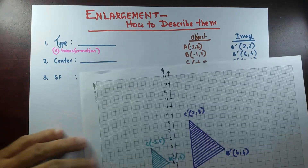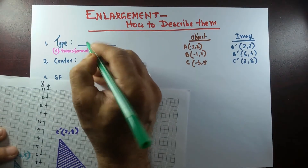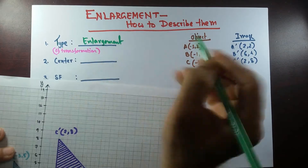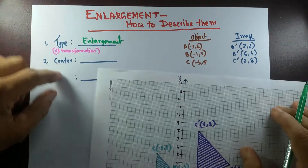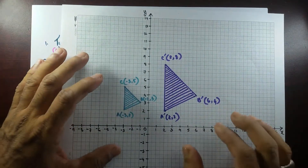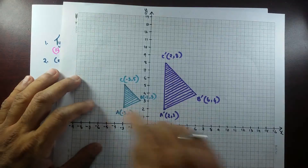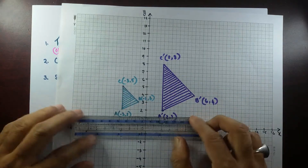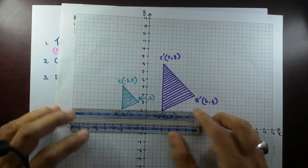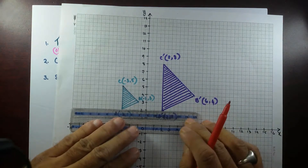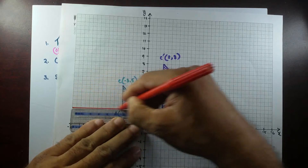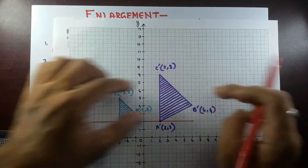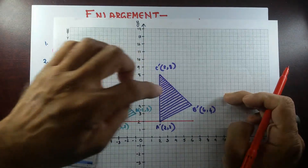We can see the image gets bigger than the object, so the transformation is enlargement. To describe it, we need the center and the scale factor. One of the easiest ways is to join corresponding points — A to A', B to B', C to C'. If I join A to A', you can see the smaller object and the bigger image, and when you join them those lines will meet somewhere — that's where our center of enlargement is.